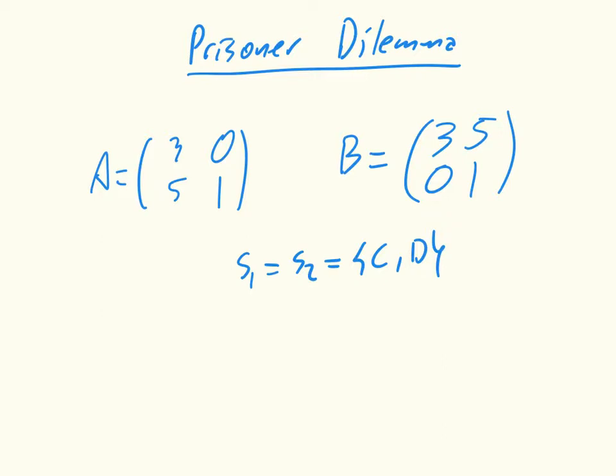If they both cooperate, they both go to prison for a short amount of time because the cops don't have enough evidence to send them to prison for longer. So if the prisoners cooperate with each other, in other words, don't say anything, they don't go to prison for a very long amount of time. We denote that with a three.